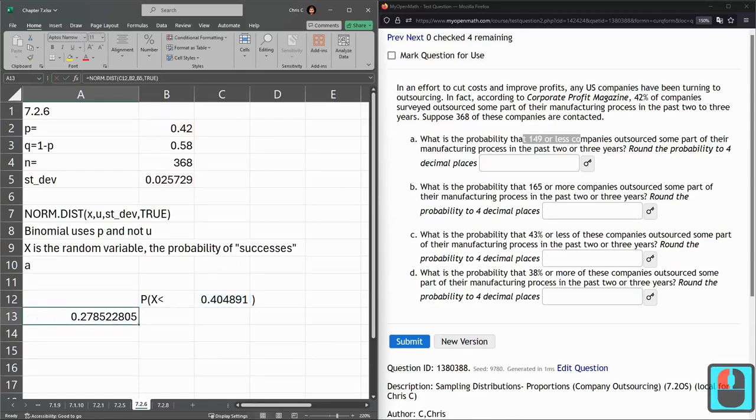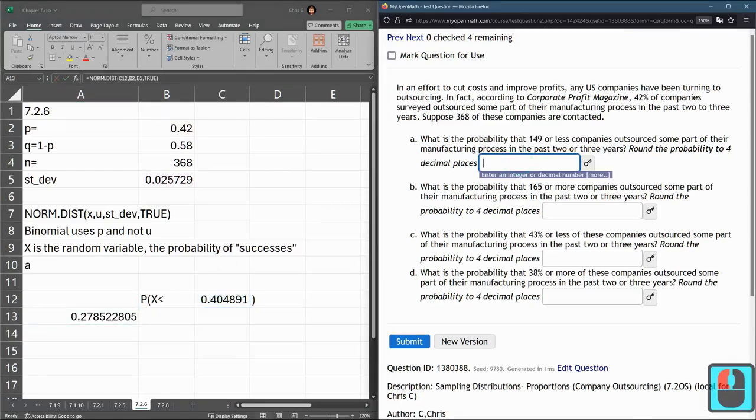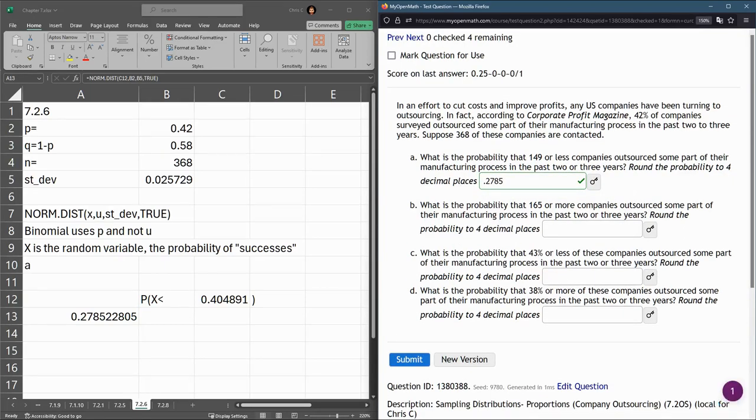There we go. Now, four decimal places, 0.2785, submit. There we go.